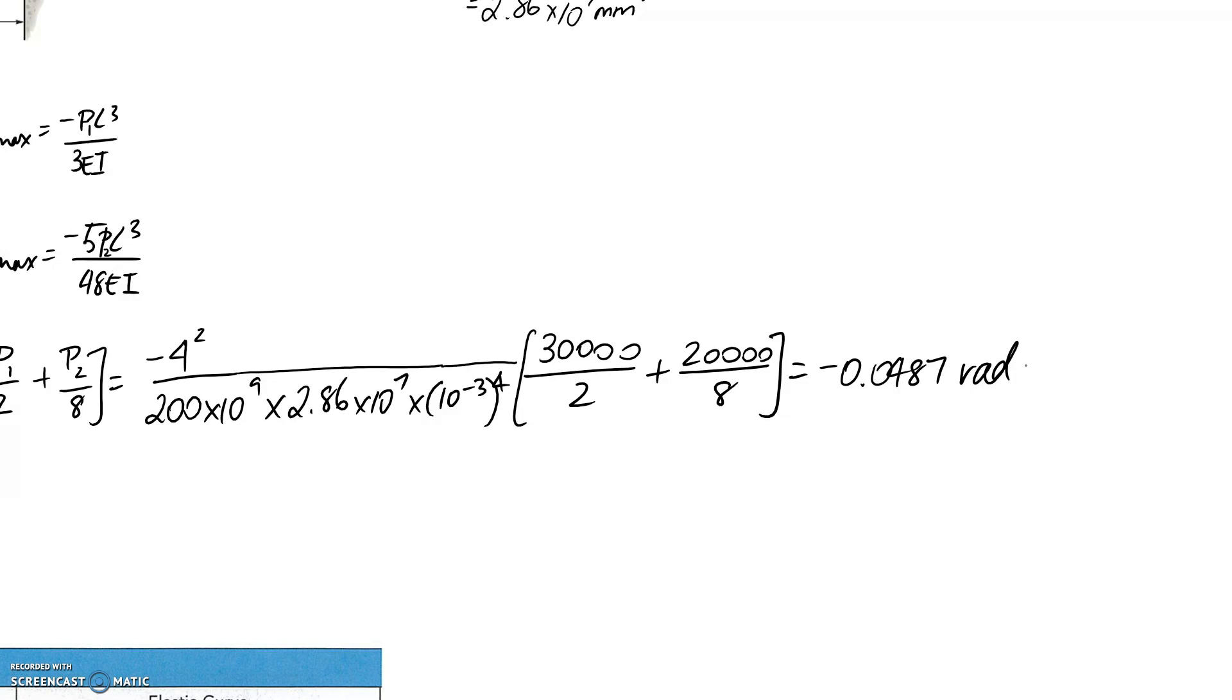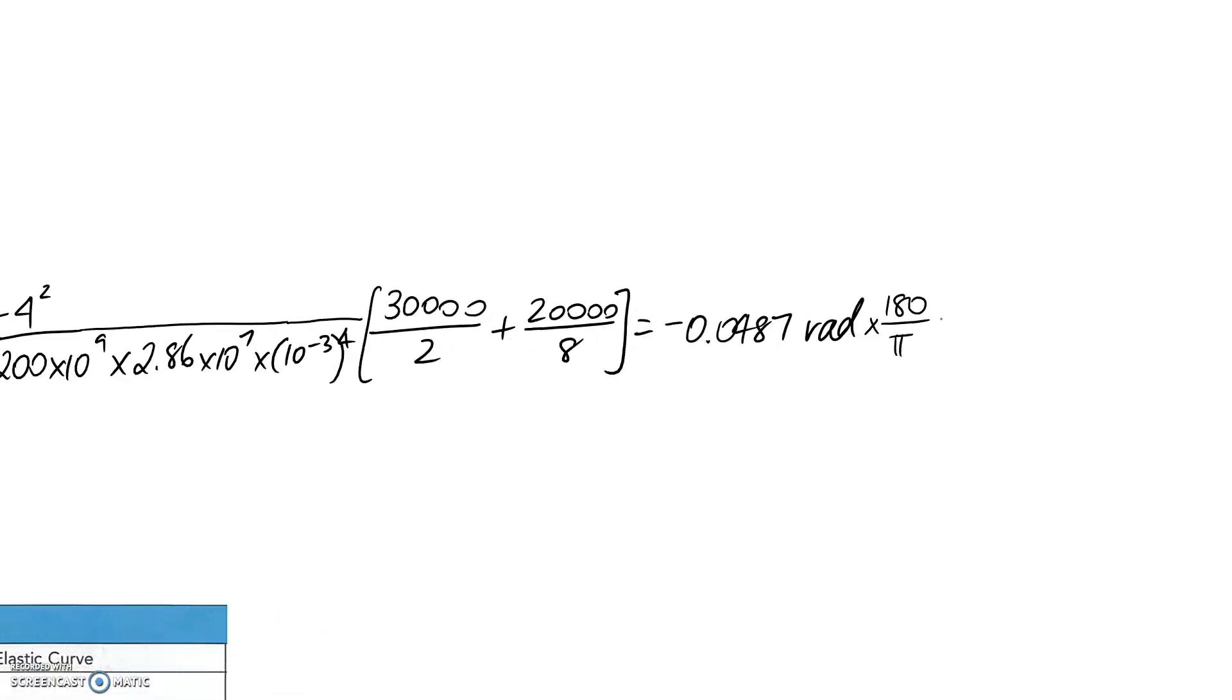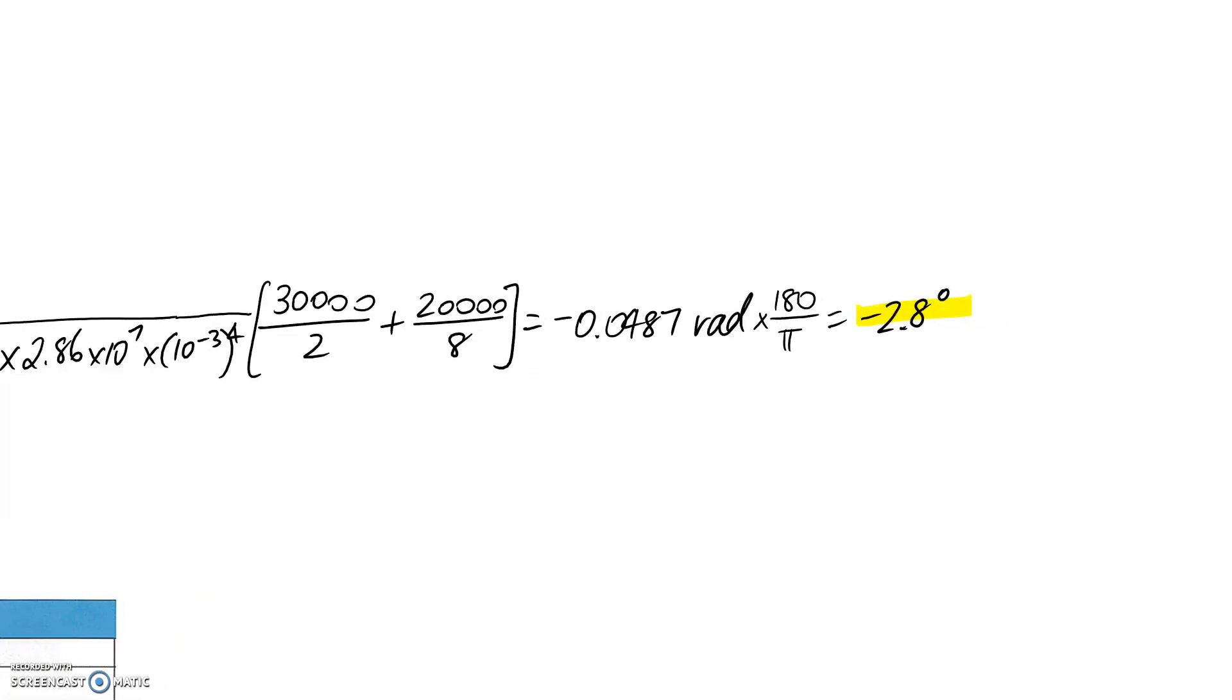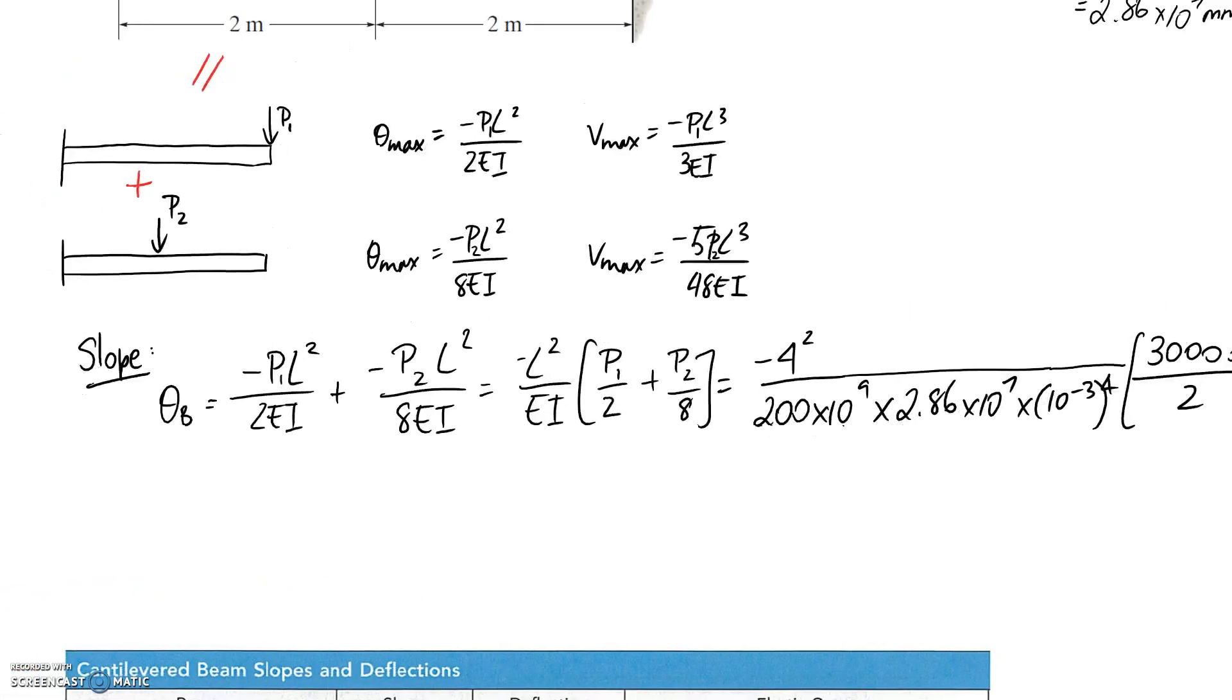If you want to then convert it into degrees, you need to multiply by 180 over pi. That's the conversion from radians to degrees, and you end up with an answer of negative 2.8 degrees for your angle. The reason that this has come out negative is because our beam is being bent below the positive x-axis. So since our angle is being measured from the positive x-axis, what it's telling us is that the beam's bending downwards like this at that point, and this is the 2.8 degrees.